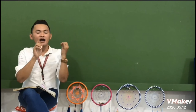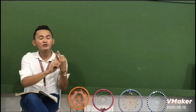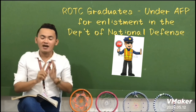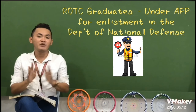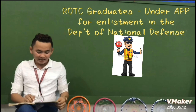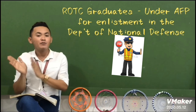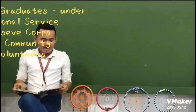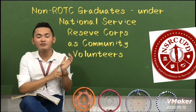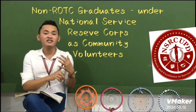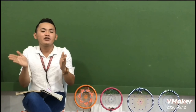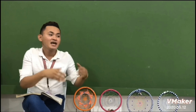What will an NSTP graduate become? We have three components. For ROTC graduates, they will be under the provisions of the Armed Forces and the police, subject to enlistment and requirements of the Department of National Defense. For non-ROTC graduates — those who completed LTS or CWTS — they will be under the National Service Reserve Corps. These graduates will be the ones engaging in community service and other services offered in the community that need their help.